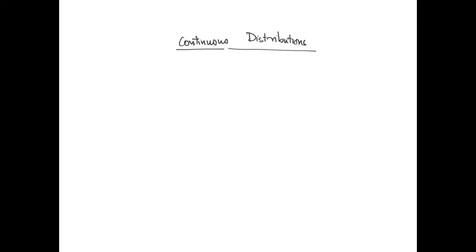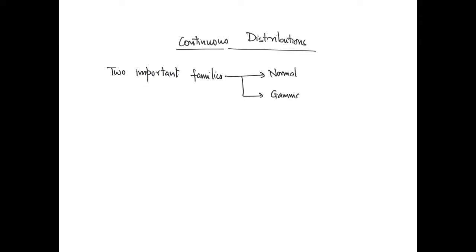Today we will talk about continuous distributions, in particular two important families: the normal family and the gamma family of continuous distributions.